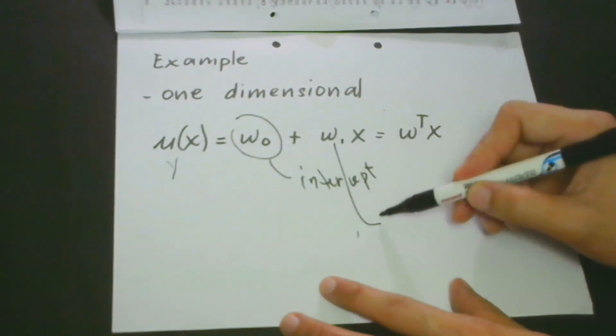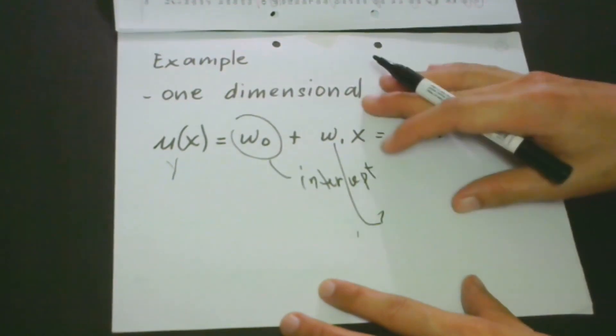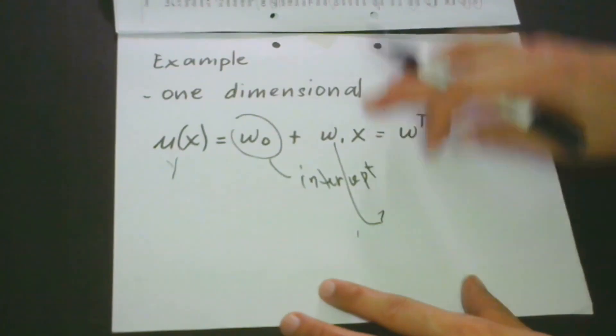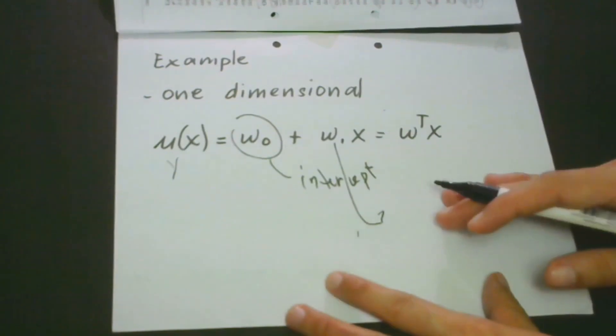So we had this in our previous lessons. The w1 here is the slope. And also we learned that when we do the computation, then we have to augment this with one.